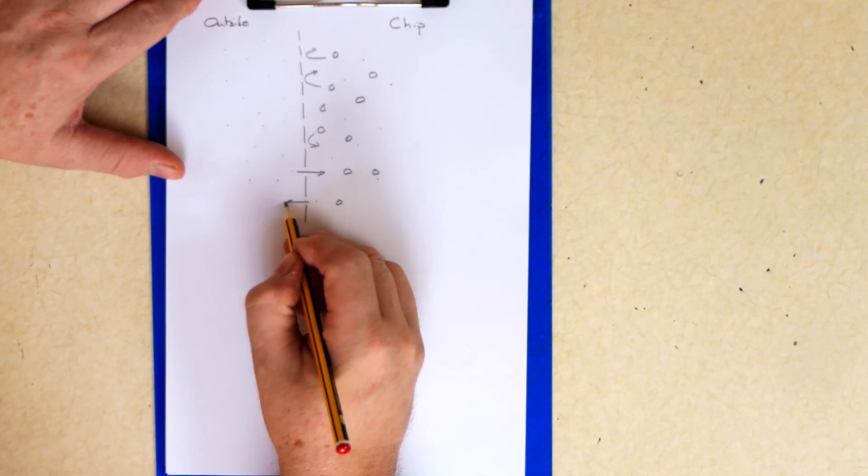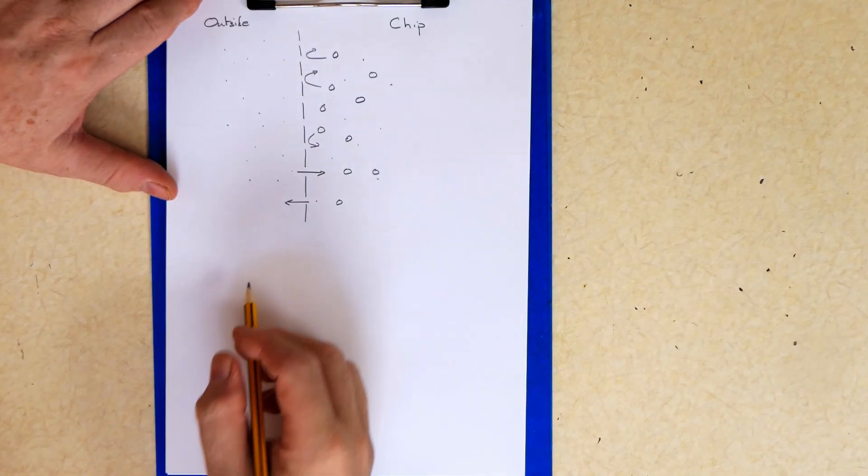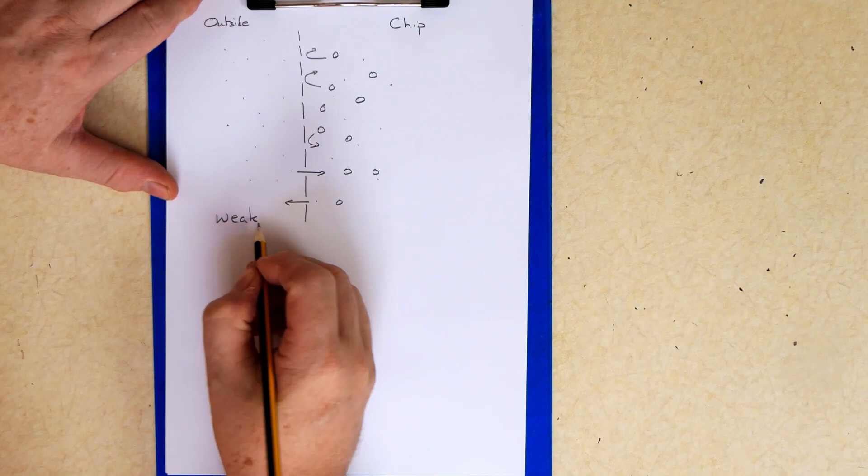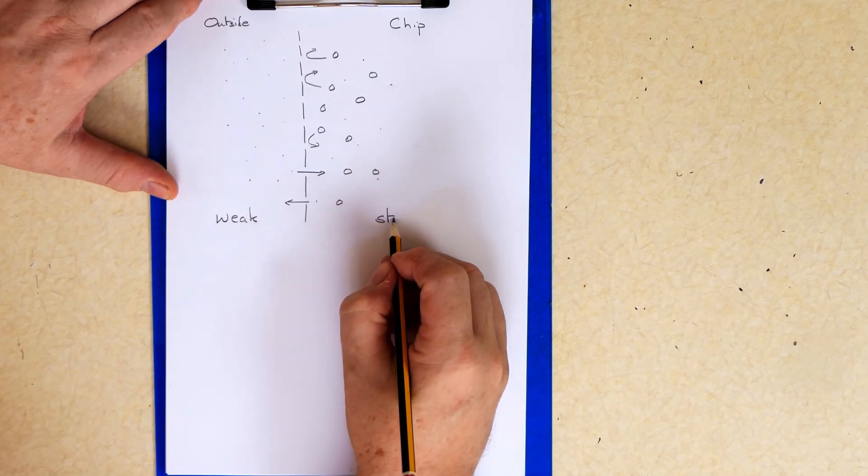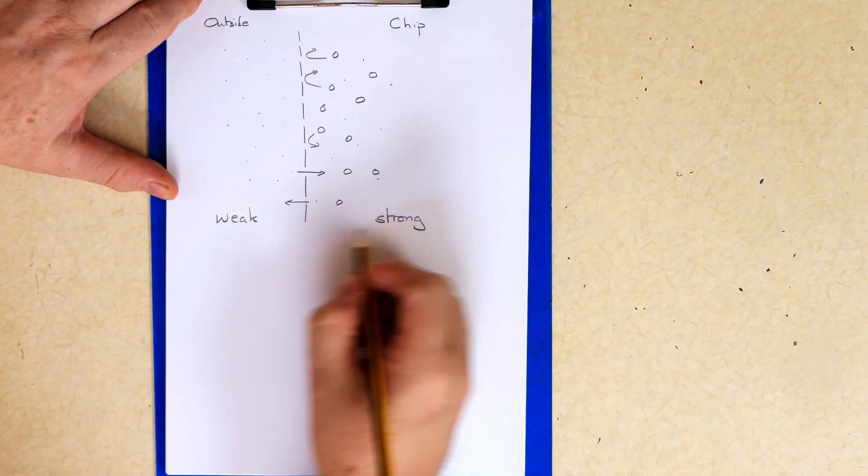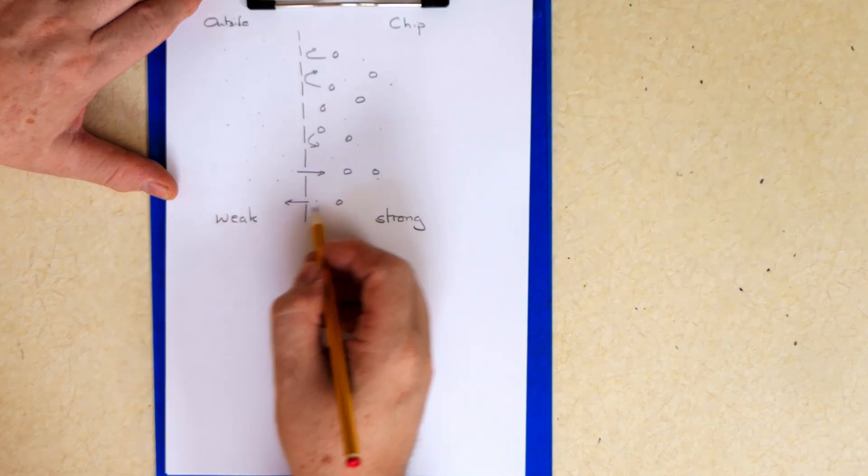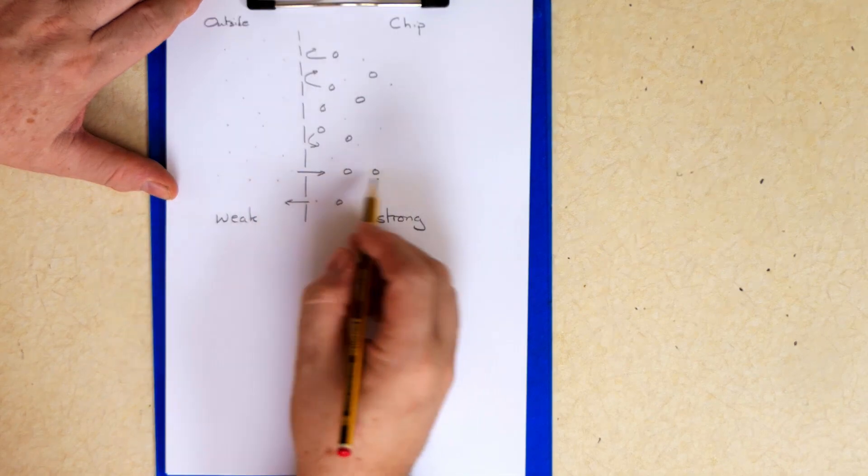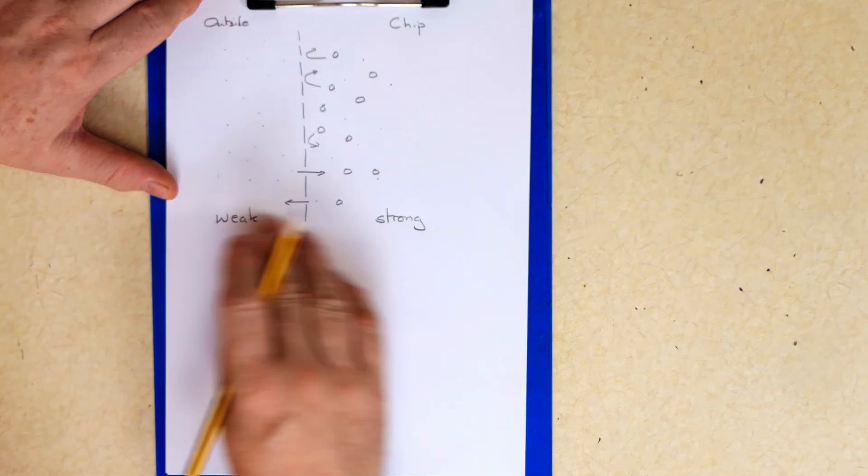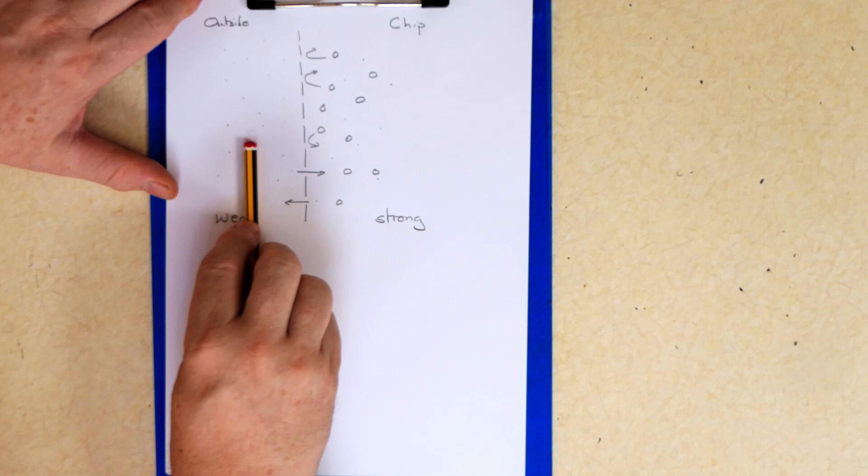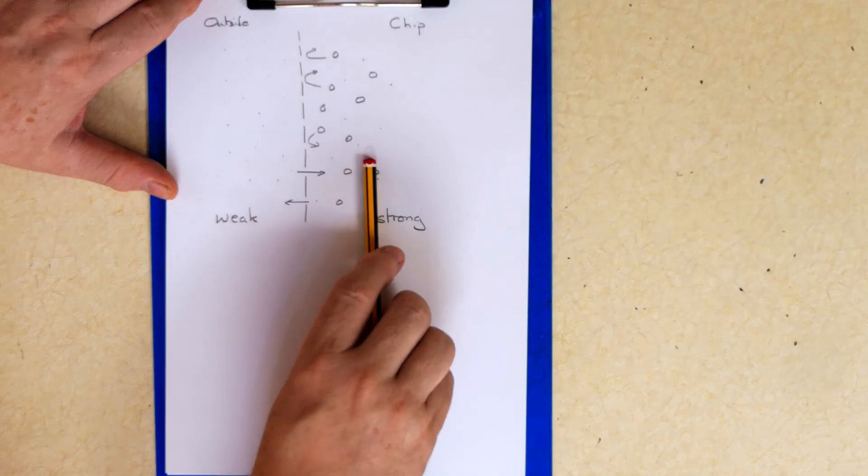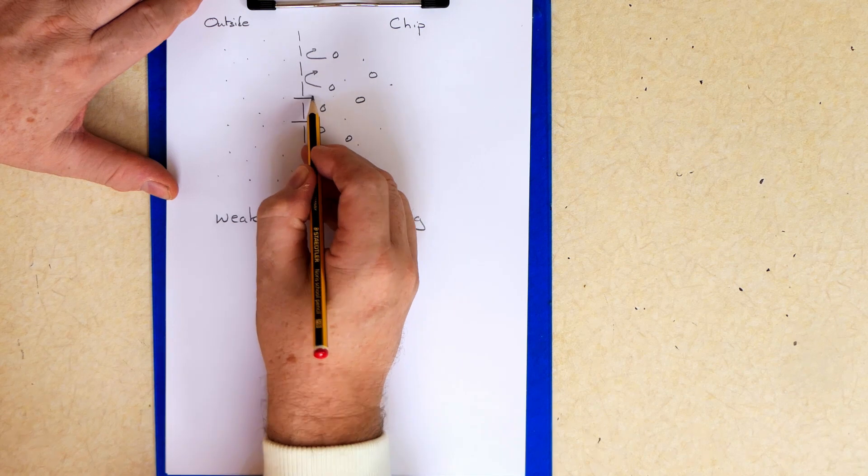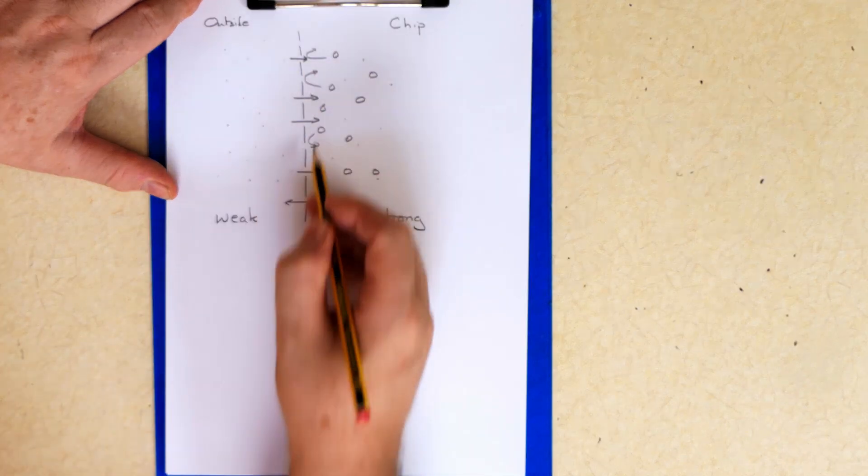They can travel inside to out and outside to in. But this is outside a weak solution and inside we've got a strong solution. So the water is trying to balance to get an even solution so it's the same strength inside and outside. So more water will move in than will move out.